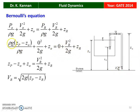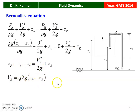The ρg term cancels in the first term. We get ZP − ZO + ZO = V_R²/(2g) + Z_R. Rearranging, since −ZO + ZO cancels: V_R = √(2g(ZP − ZR)). So V_R = √(2g(ZP − ZR)) is the answer.